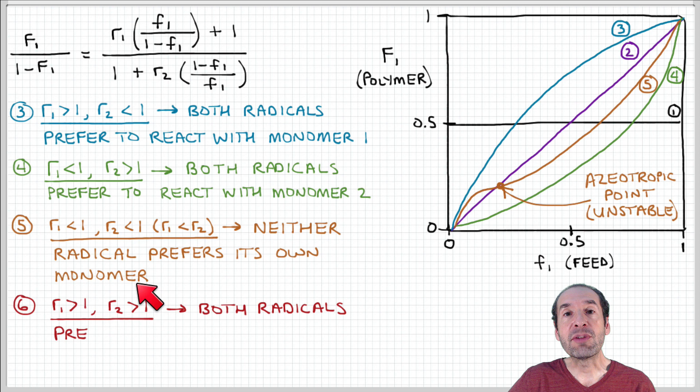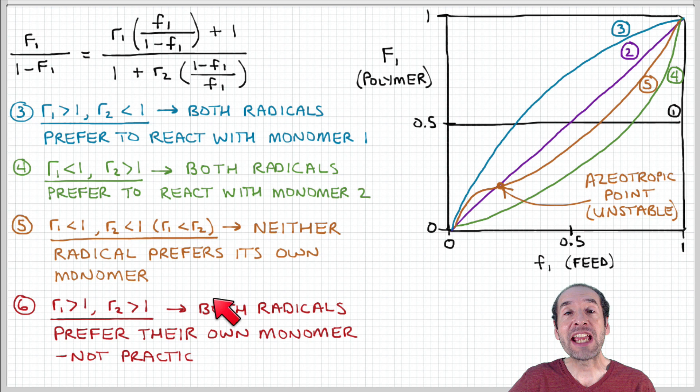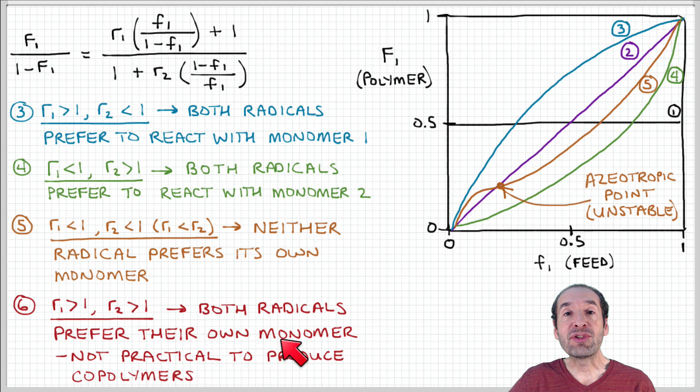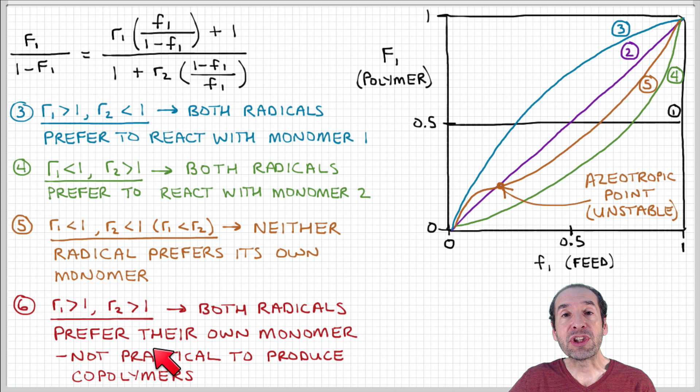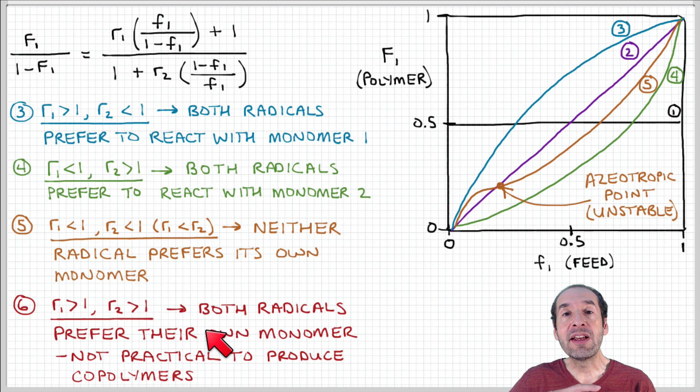The final case is when both reactivity ratios are greater than 1 — both radicals prefer to add their own monomer. A chain ending in monomer 1 wants to add another monomer 1, and a chain ending in monomer 2 wants to add another monomer 2. One might think this is impractical for copolymer production, but depending on the magnitudes of these ratios, there can be a slight preference for one over the other, and this can be used to make copolymers with long blocks of one monomer versus the other.